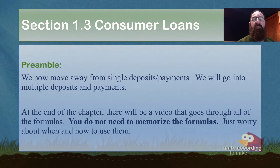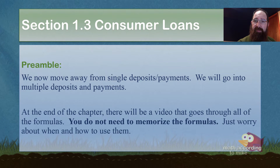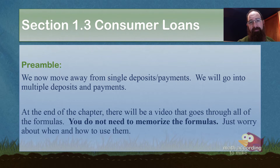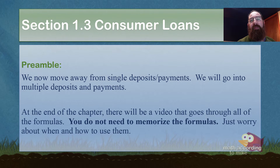Preamble: as it says there, we move away from single deposits or payments and go into multiple deposits or payments. So the first two sections — Simple Interest and Compound Interest — are only one deposit, one payment. Meaning you put the lump sum there and you come back later. That's it. Now, in the remaining sections, there is going to be multiple deposits and multiple payments.